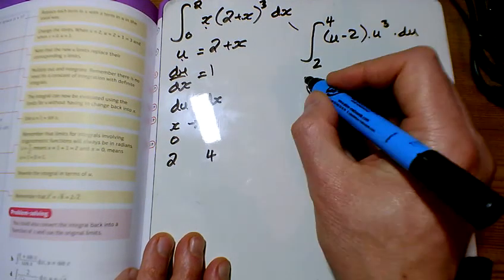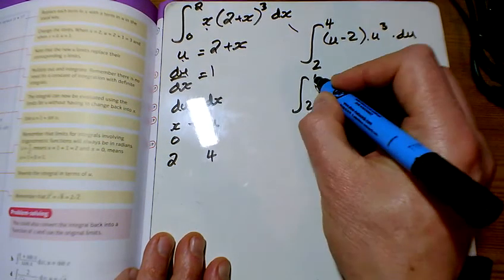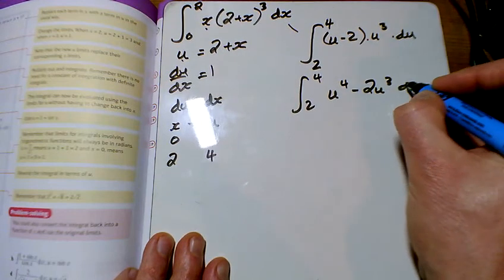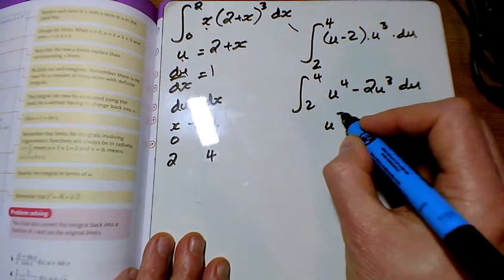So straight in there with all of that. Let's multiply out the brackets, I've got u to the 4, take away 2u cubed, and now let's do the integral.